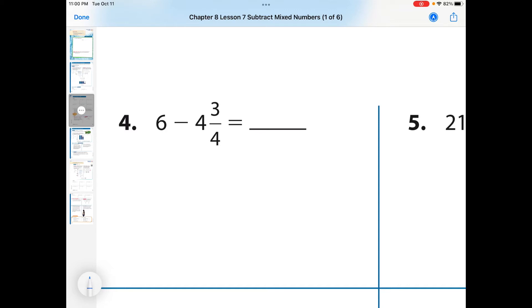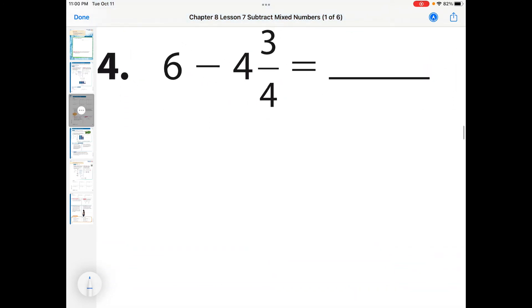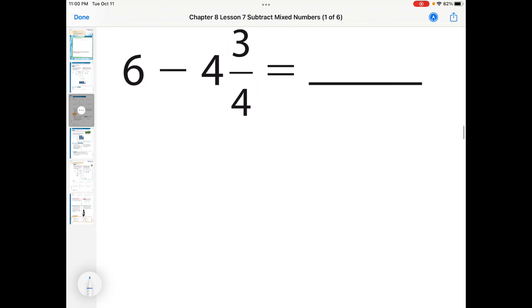So this one is 6 minus 4 and 3 quarters. And so what I'm going to do is let's give us a little more space here. And let's see if I can... There we go. That'll work. And so what I'm going to do is I'm going to write this in a typical subtraction format. So I'm going to go 6 and I'm going to go minus 4 and 3 quarters. Now, what's a little weird is what's going on right here. There's nothing for us to subtract.